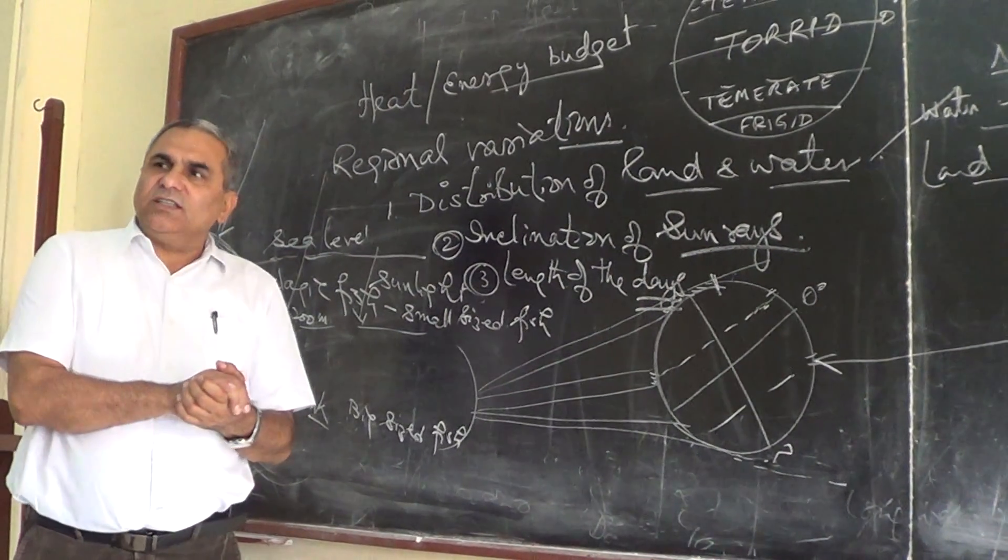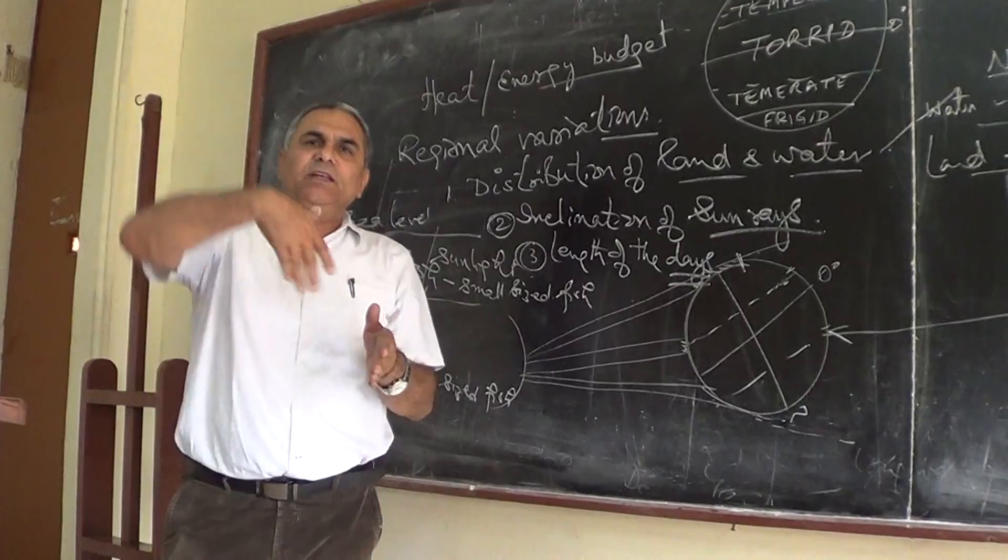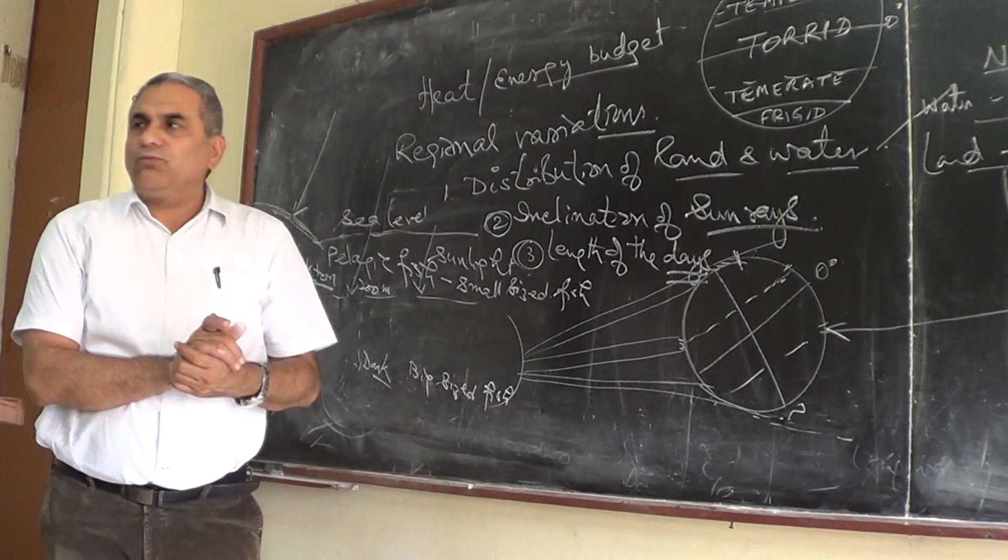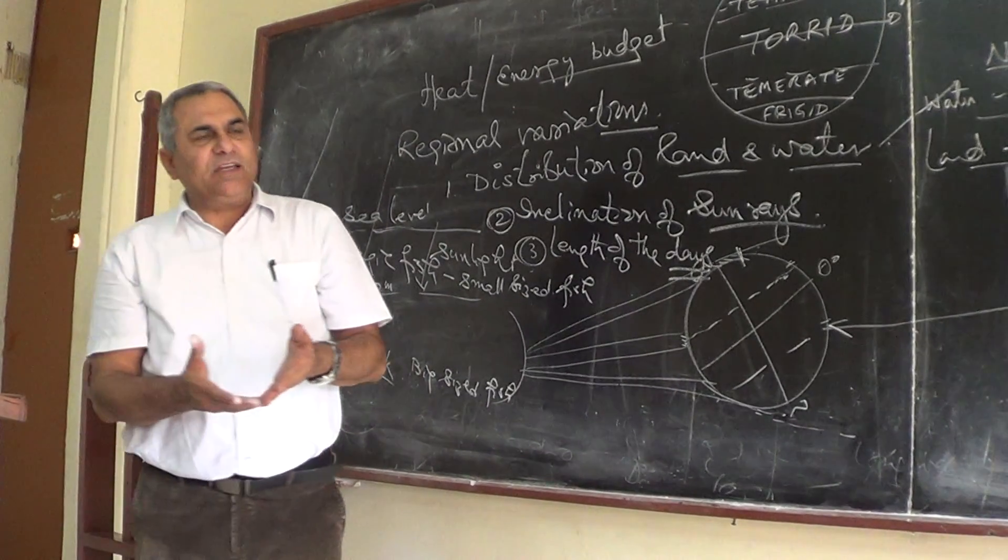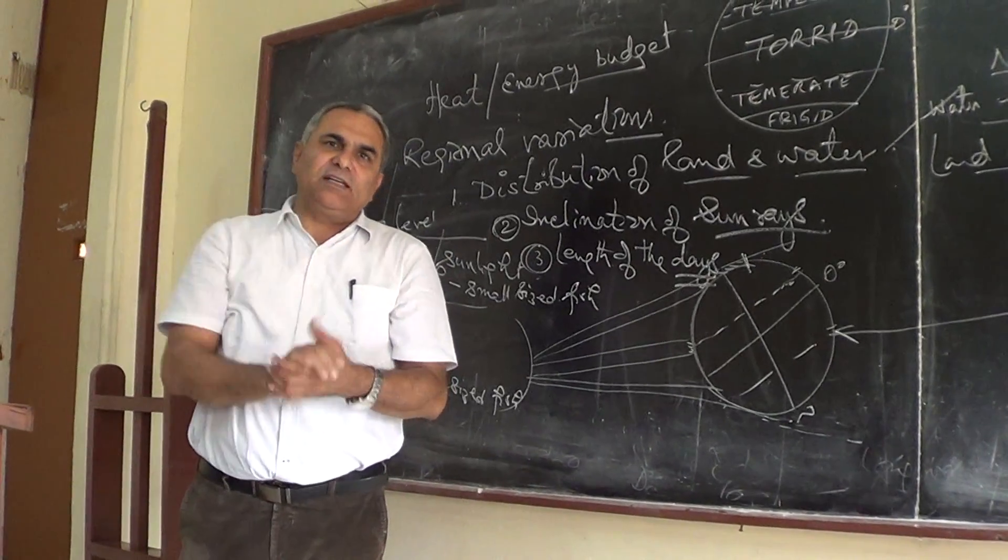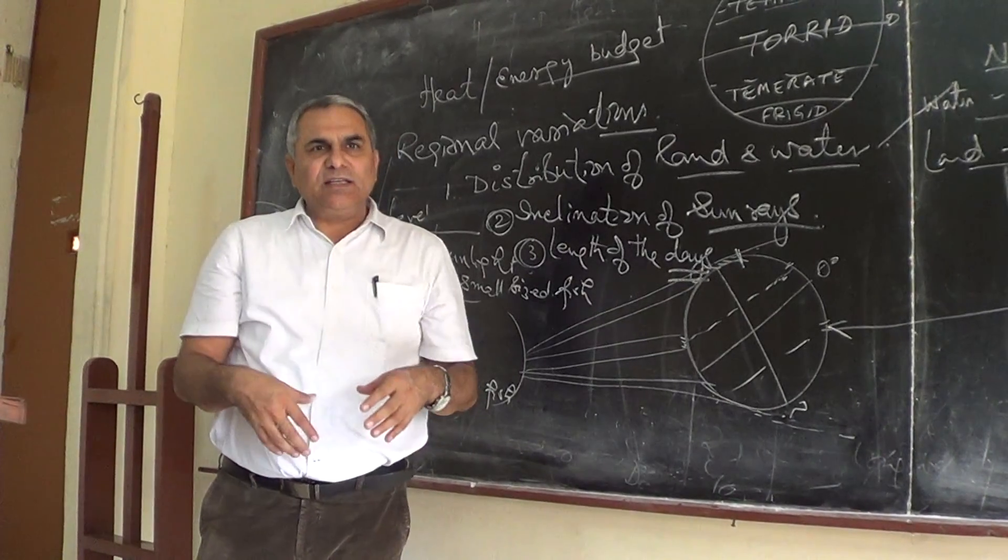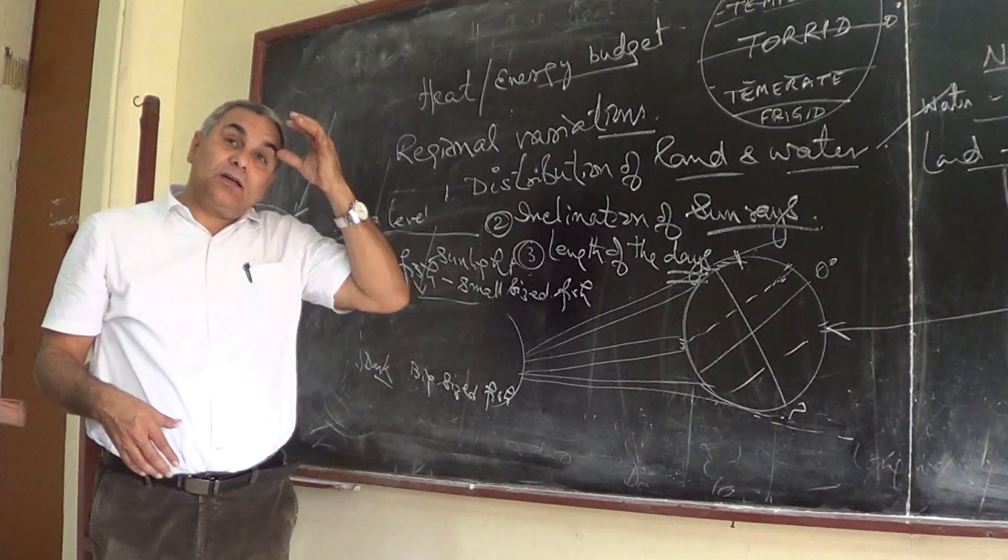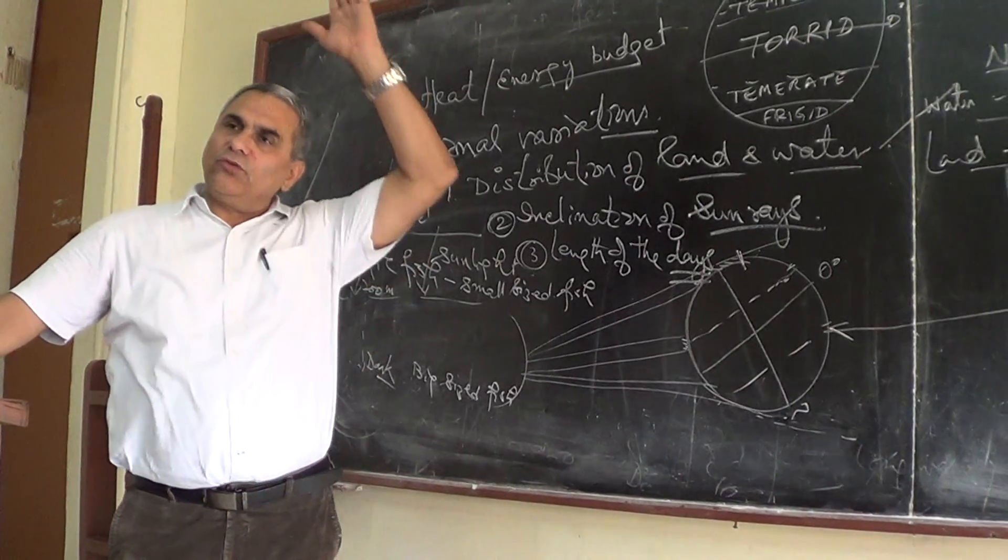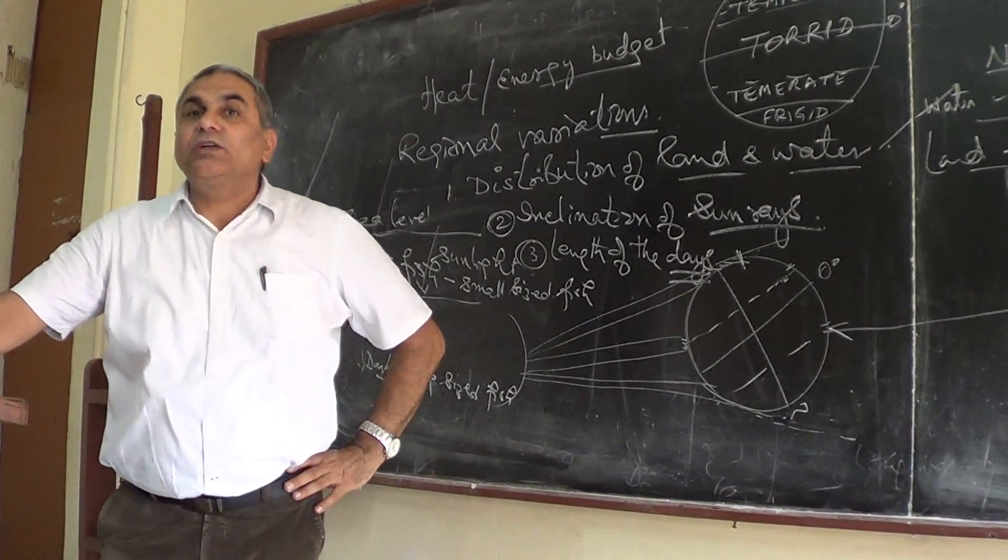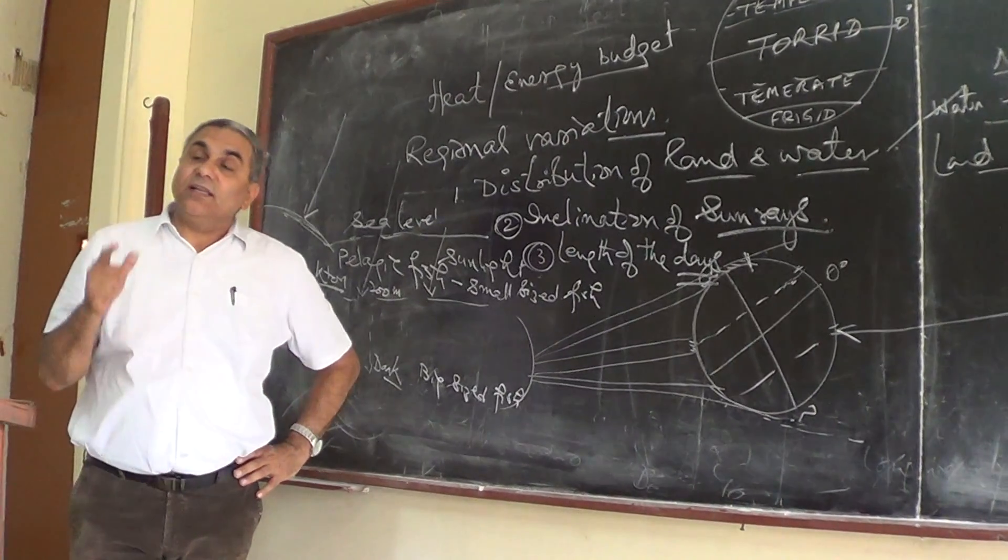Now, after this heat budget, I hope the table is clear to you. How the 100 units come, how many units are reflected back. When 100 units come from the sun, how many units reach the earth? 45 units. So 55 are reflected back from the atmosphere itself. Out of those 45 units, there is a window called the atmospheric window through which long waves are also reflected from the atmosphere - that's 8 percent. You have studied this. Good.